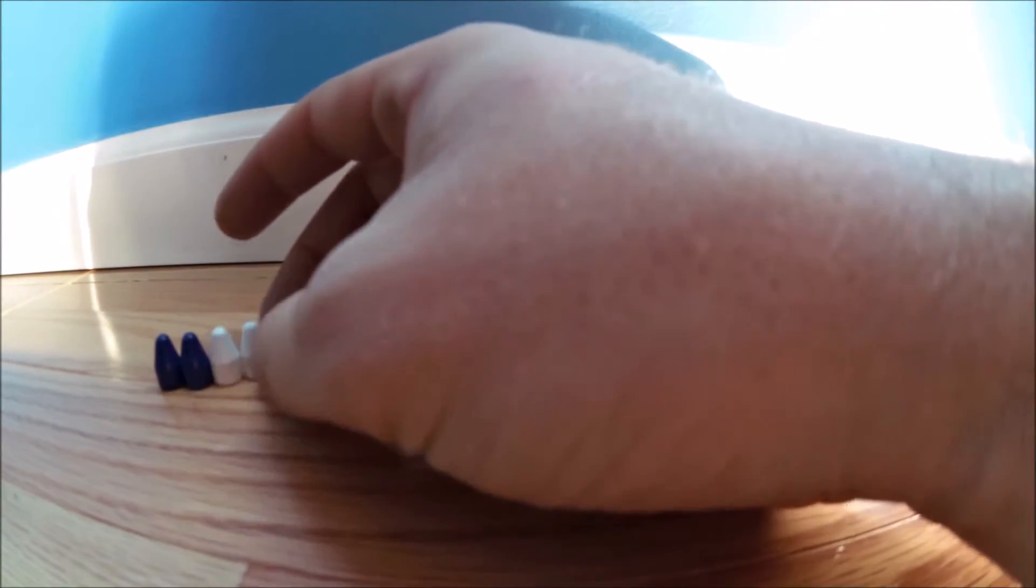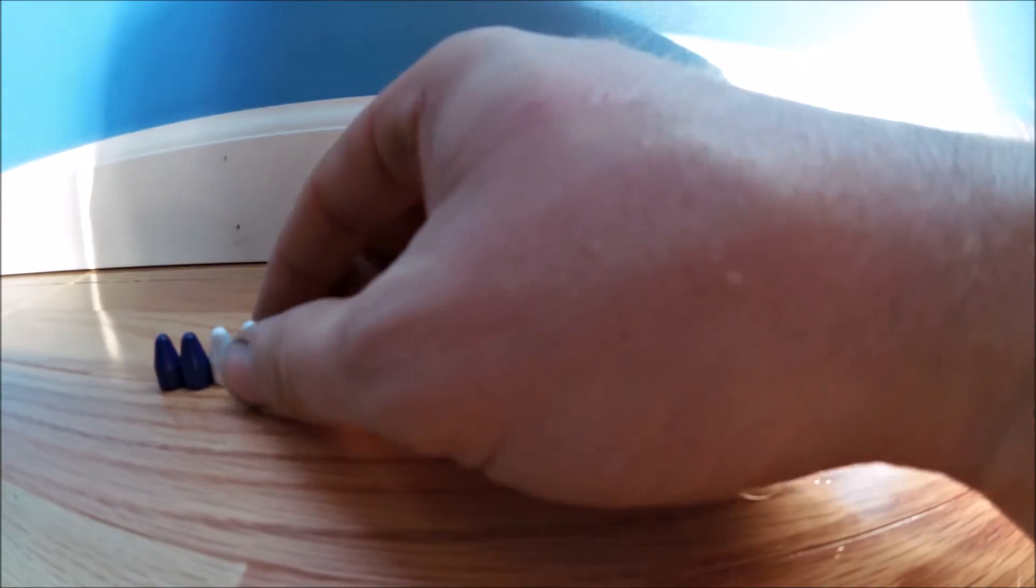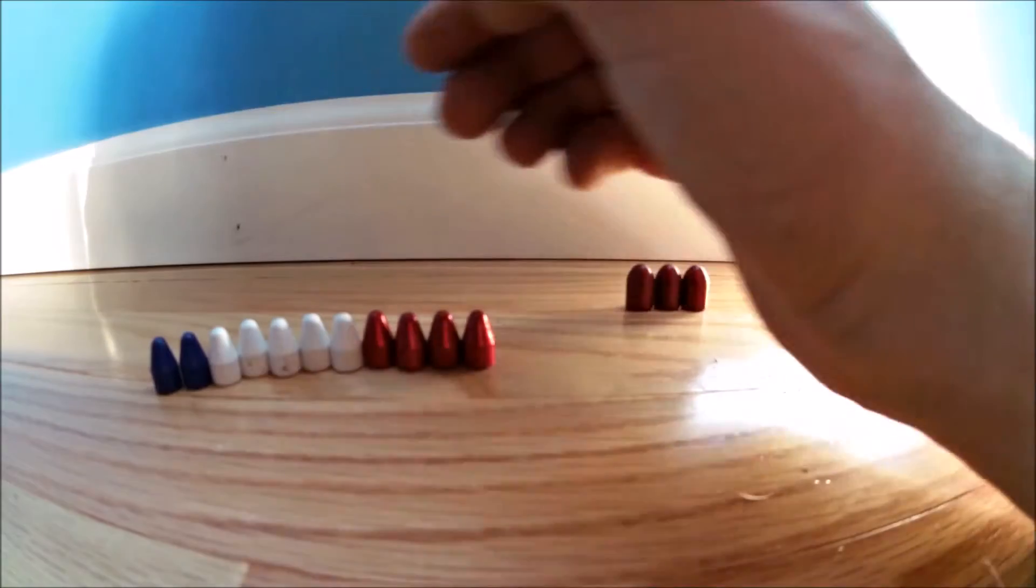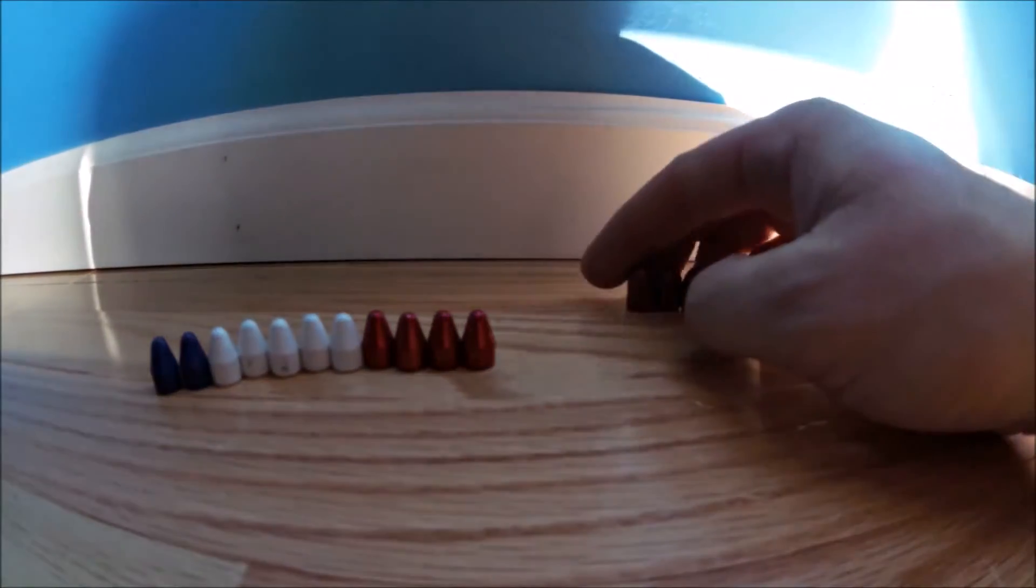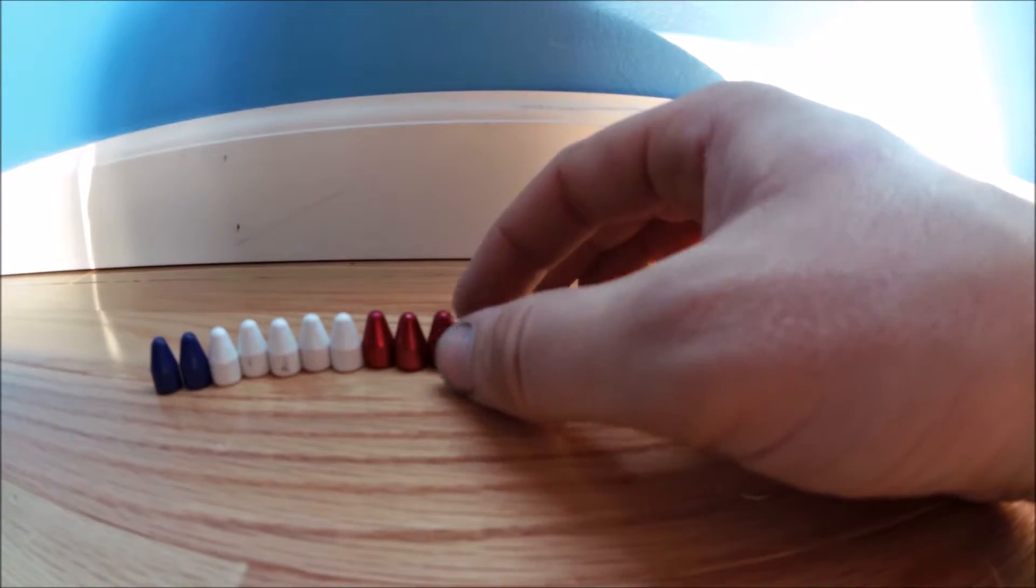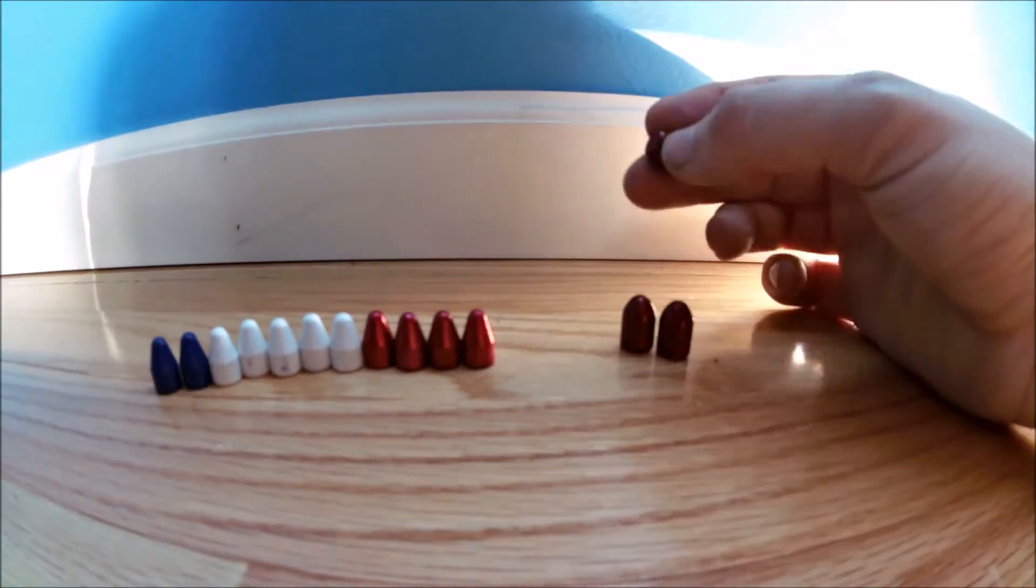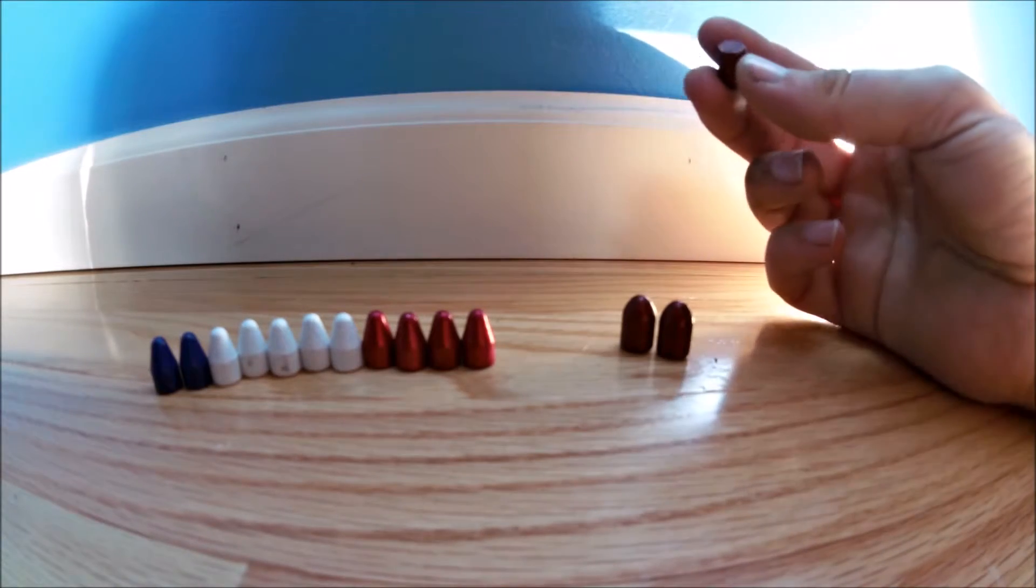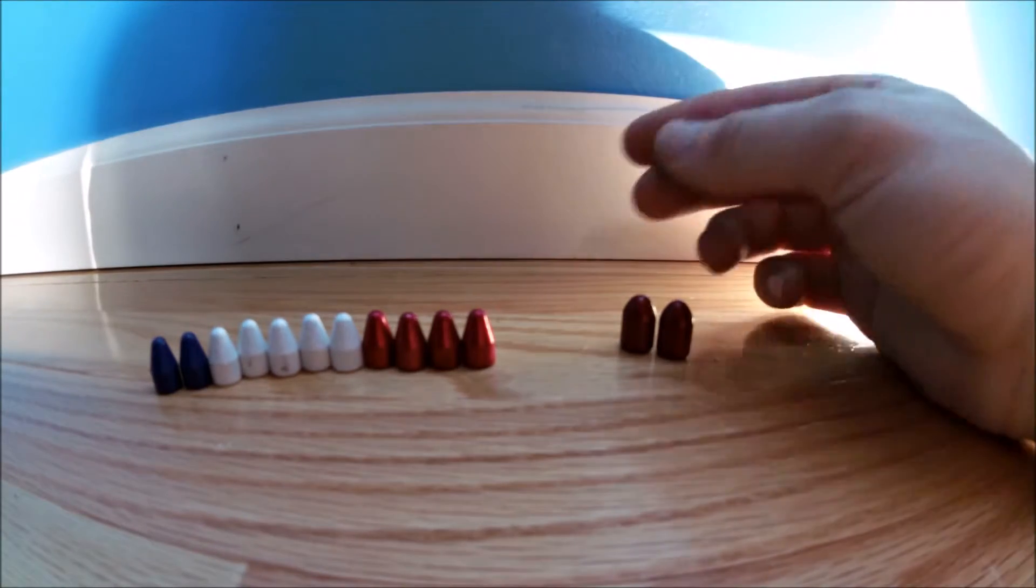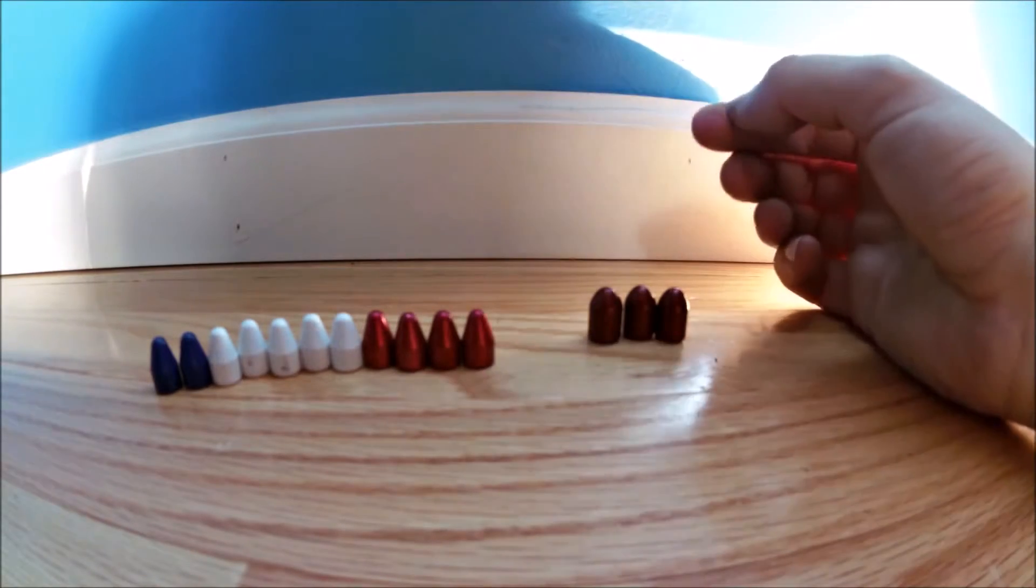The 9 millimeters are 115 grain and the 10 millimeters are 180 grain. They both are coming in a little bit light on my scale, which is not a big deal for me.